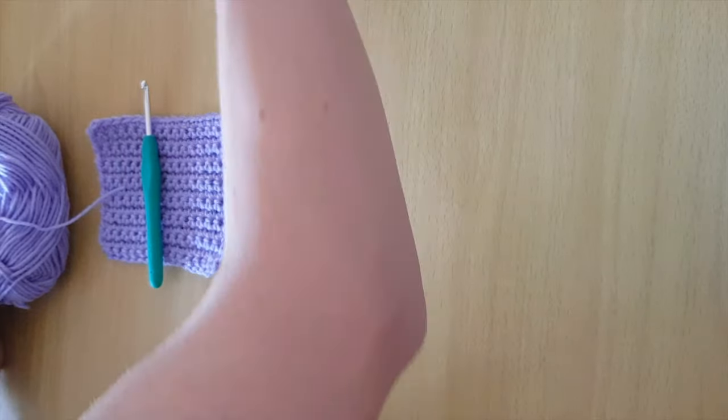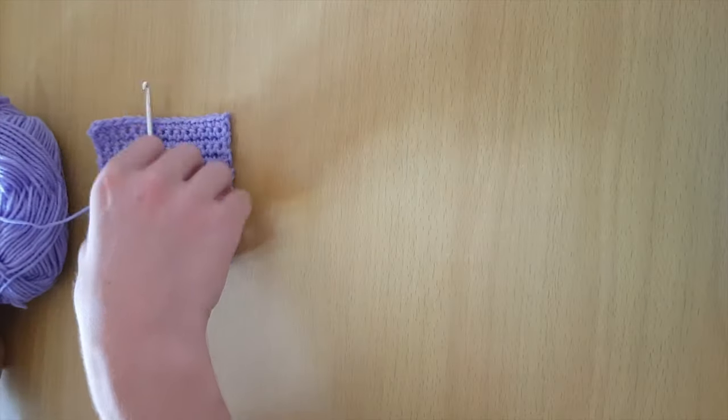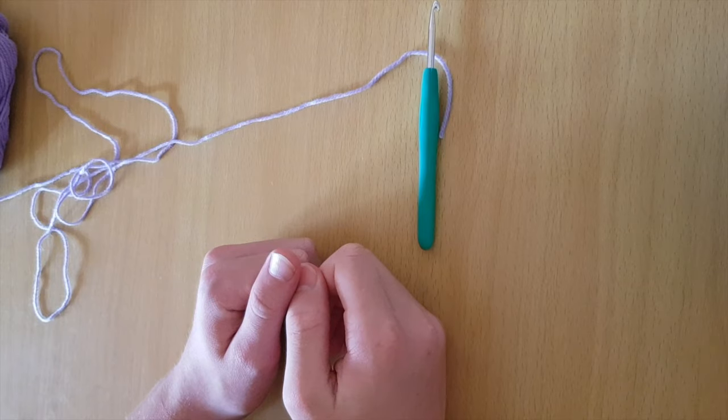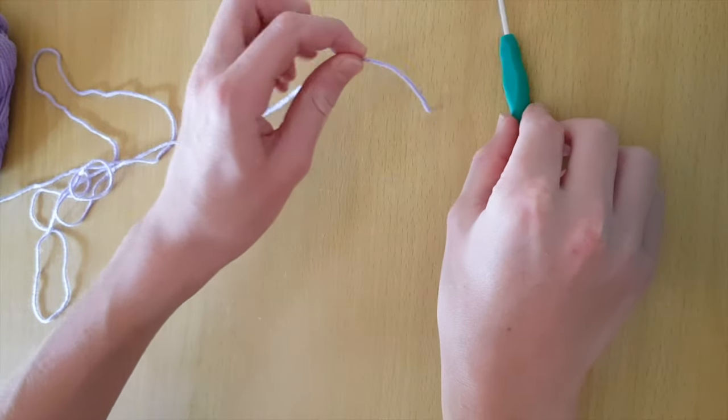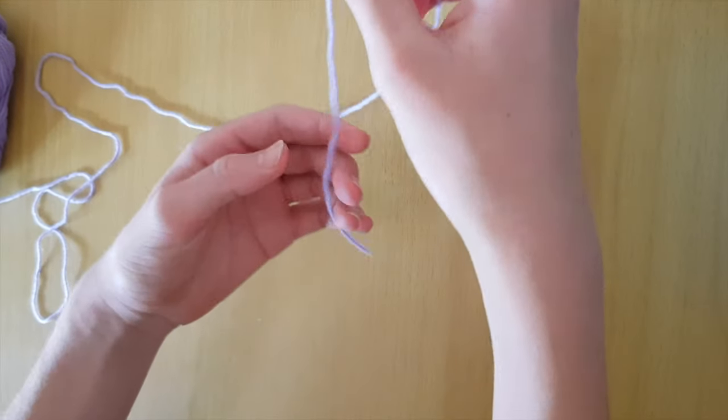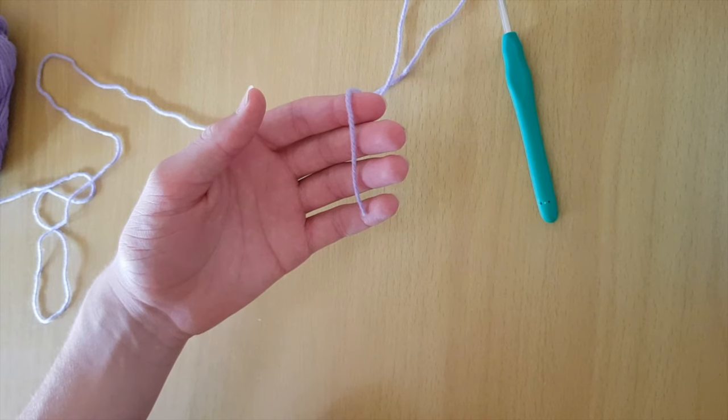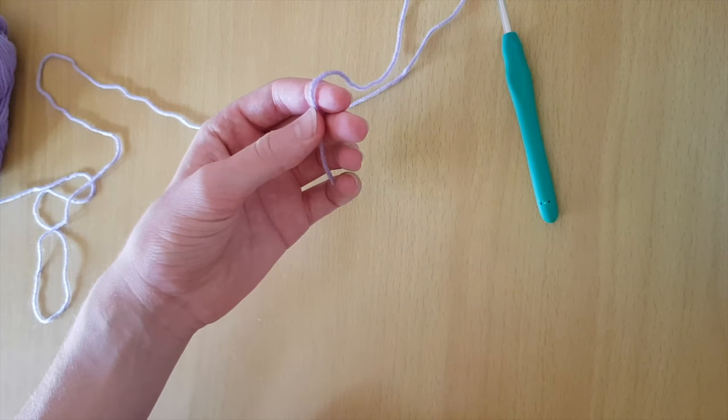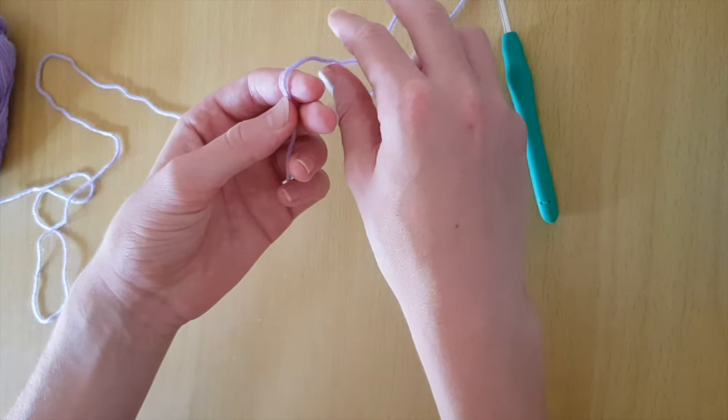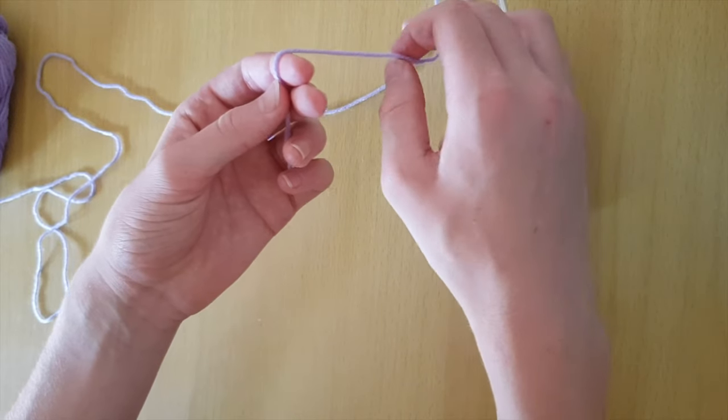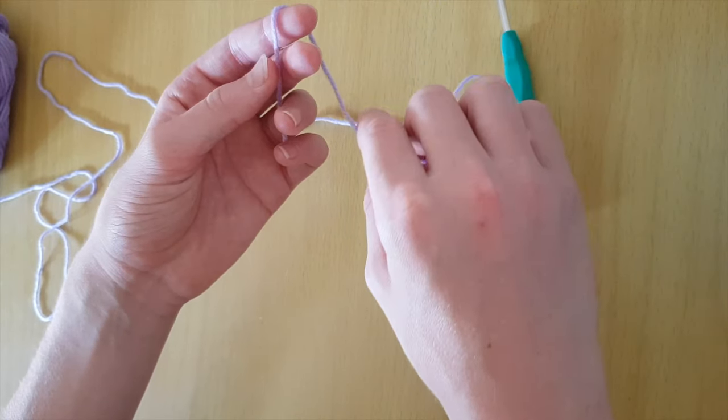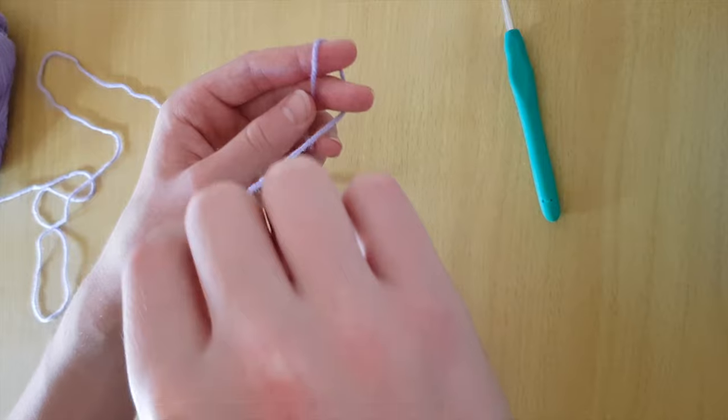So let's get started. To get started, grab the short end of the yarn with your left hand and you can then put your thumb on it to keep it secure. Grab the long end going back towards your ball or skein and wrap the yarn around with your right hand and form a cross.